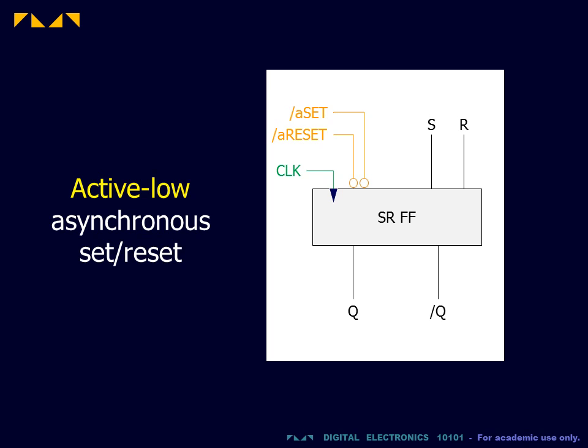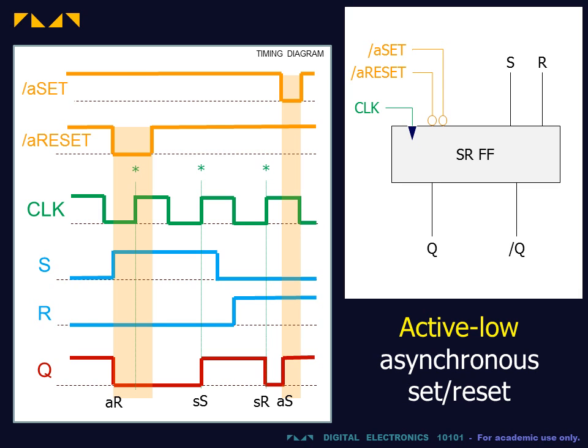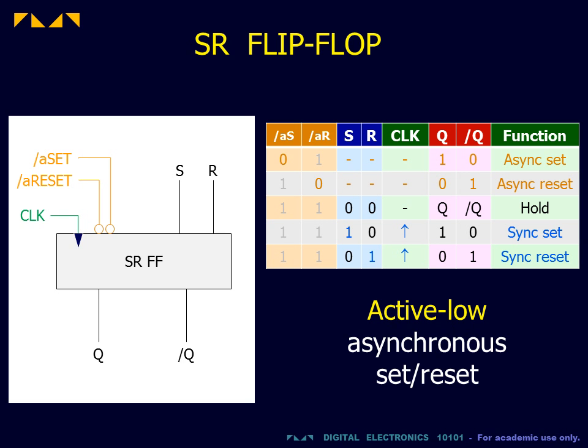The asynchronous inputs may also be designed to be active low. For active low inputs, asynchronous set and reset occurs when the corresponding input is zero. As before, active low control inputs are indicated by bubbles and the bar label.